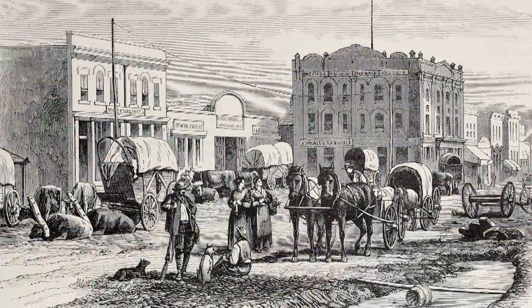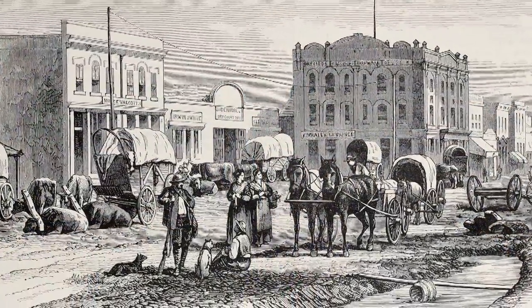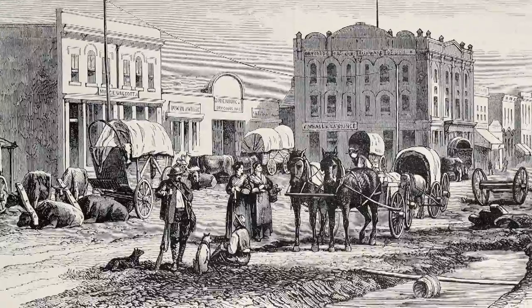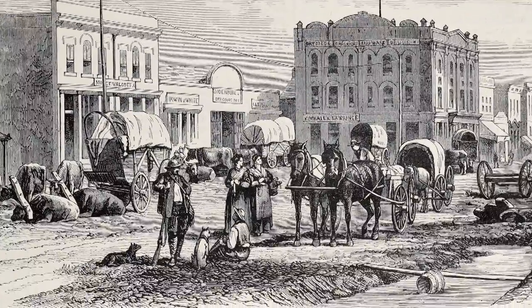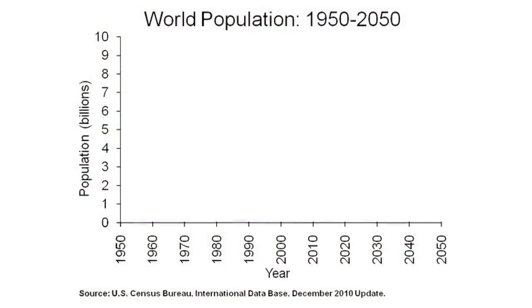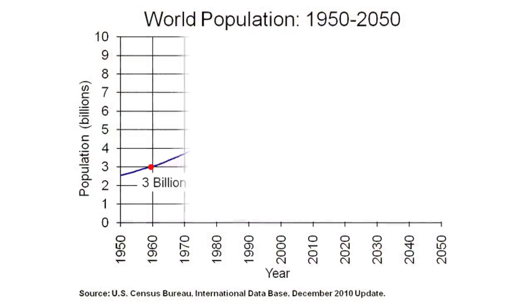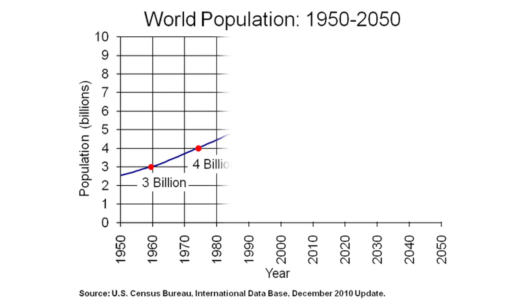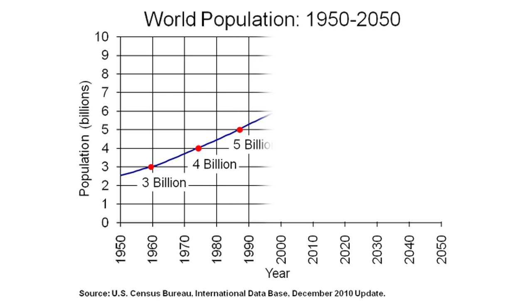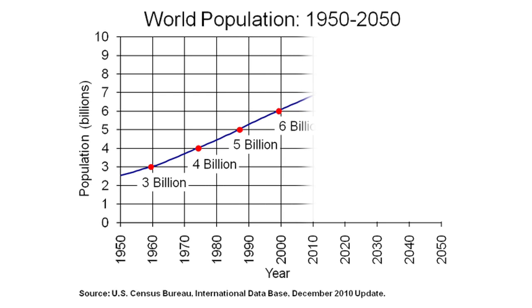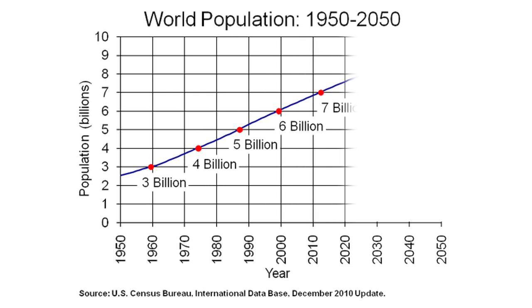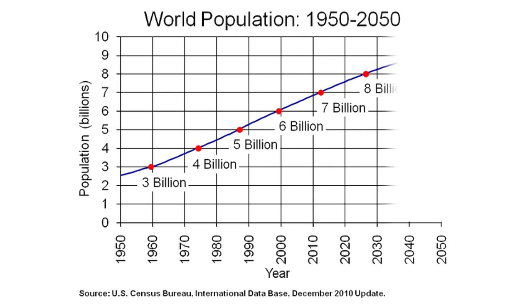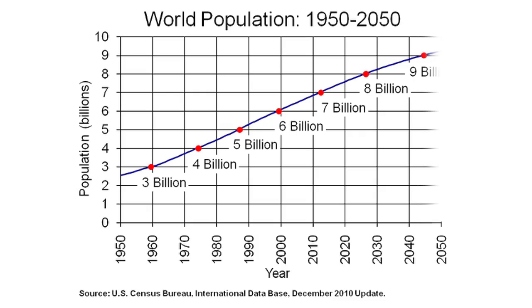Until 1900, the global population grew slowly. In the past century, however, the population of the world has doubled to 3 billion in 1960, and by the year 2000, had again doubled to 6 billion.